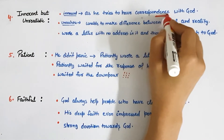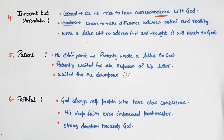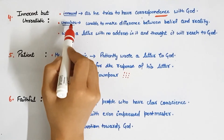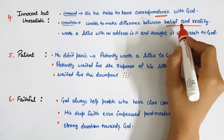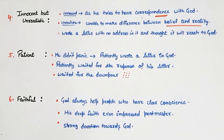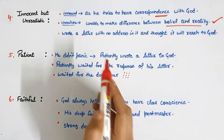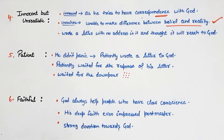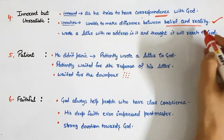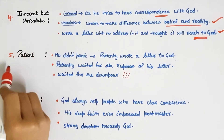Fourth point: innocent but unrealistic. He was innocent but not practical at all. He was innocent because he tried to have correspondence — a conversation — with God by writing a letter to Him. A practical person would know that this is impossible. How was he unrealistic? He was unable to make a difference between belief and reality — having faith is one thing, but accepting reality is another. He wrote a letter to God with no address in it, and thought it would still reach God — only an unrealistic, impractical person would do that.